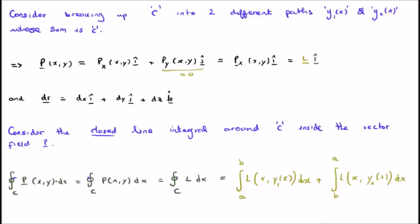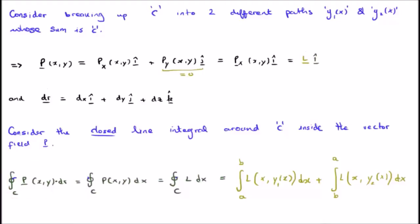Now we're going to consider the closed line integral around the curve C inside the vector field P, which only has an i-hat component. The infinitesimal line element is dr, which equals dx i-hat plus dy j-hat plus dz k-hat. There is a small arrow on the closed integral indicating its direction — in this case anti-clockwise. We take P dot dr, but since P only has an i-hat component, the dot product yields no contribution from dy j-hat or dz k-hat. So our closed line integral going anti-clockwise simply becomes the integral of L dx.